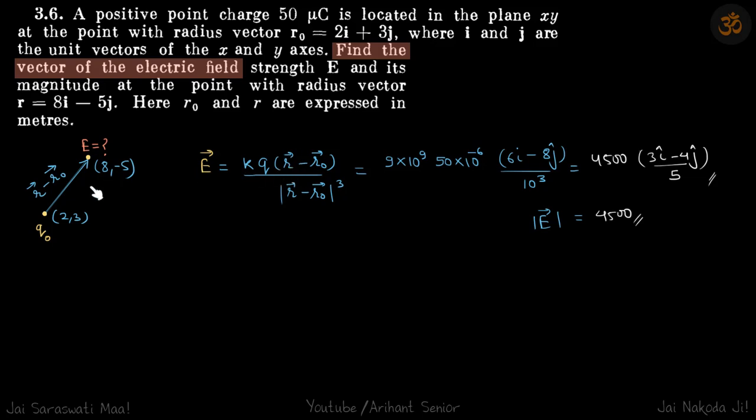So here if this is q0, this is where we need to find the field. If this is r0, this is r. This vector is r minus r0, which we are going to put here.